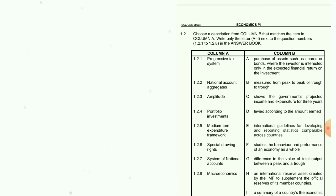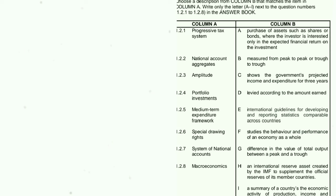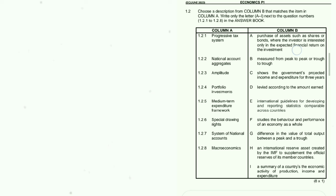Now 1.2 — choose a description from Column B that matches the item in Column A. Write only the letter next to the question number. 1.2.1: Progressive tax system — let me zoom the screen. The answer is D: levied according to the amount earned. That's the progressive tax system.